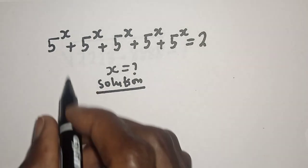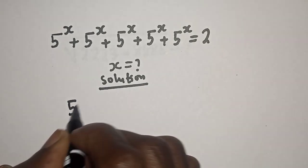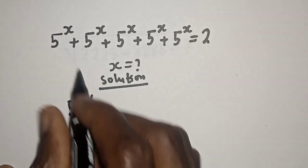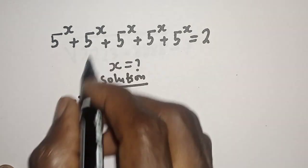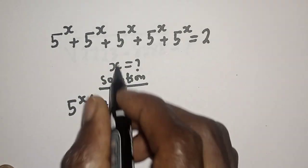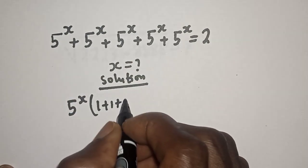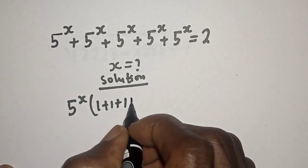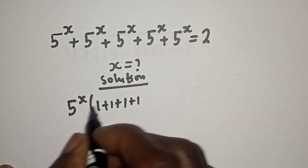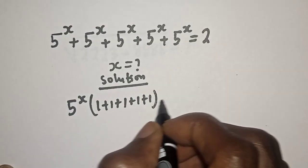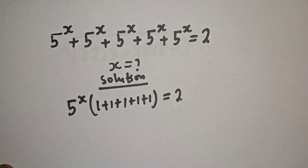Here we have 5 raised to power s, which is very common. Let's bring it out. This divided by this 1, this divided by this 1, this divided by this 1, and this divided by this 1, is equal to 2.